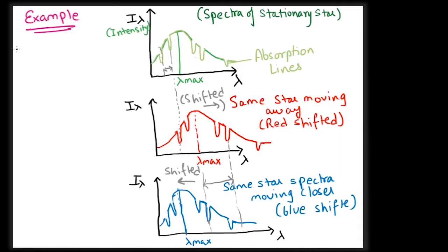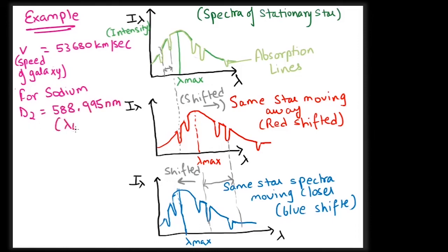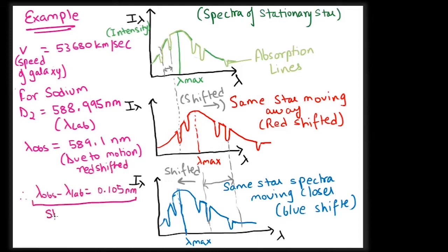For example, in a galaxy moving at a speed of 53,680 km per second, we will see a difference in the observed and measured wavelength of 0.105 nm for the D2 line of sodium, which normally occurs at 588.995 nm but will now show at 589.1 nm. Similarly, shifts in other absorption lines can also be calculated to find the speed.